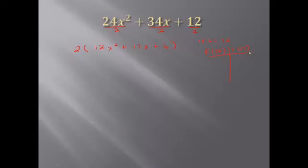Going through the factor pairs of 72: one times 72 gives a sum of 73; two times 36 gives 38; three times 24 gives 27; four times 18 gives 22; six times 12 gives 18 — getting closer to 17. Finally, eight times nine gives a sum of 17. That's the pair we need.